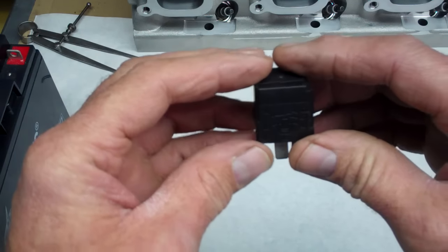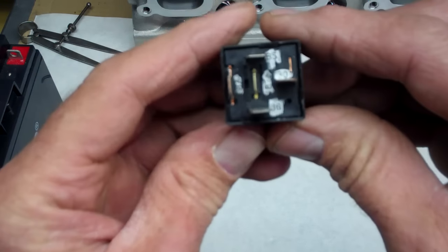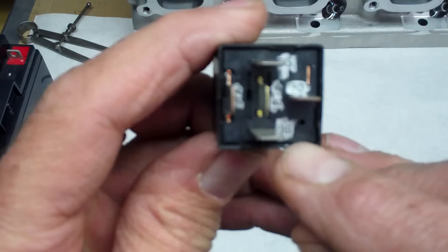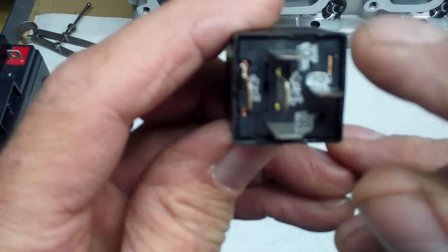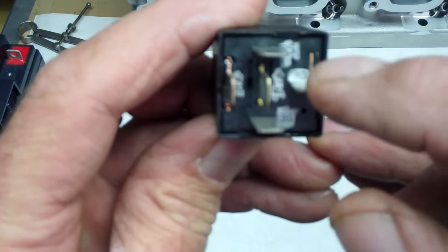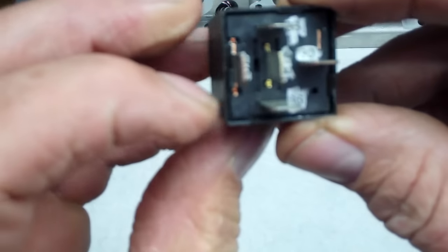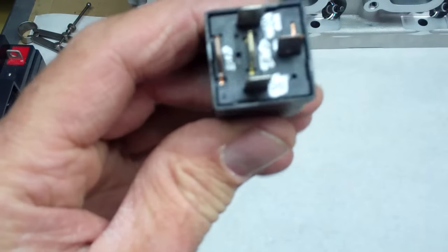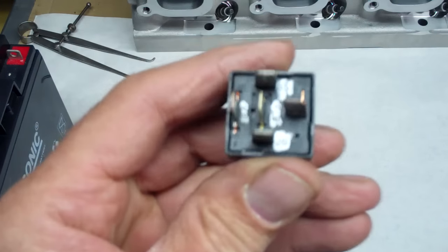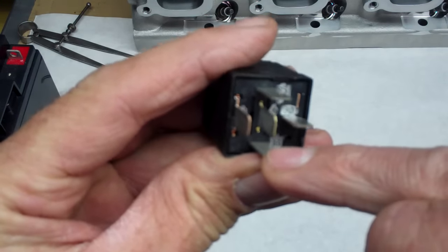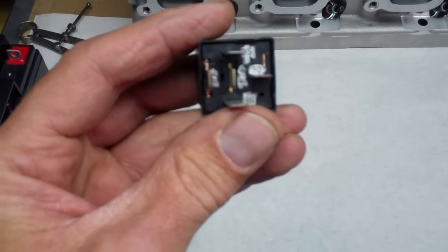Let's look real quickly at this relay. You'll notice on the bottom each one of these terminals has a number. This is 86, 30, 85, 87 and the center terminal is 87A. That's important because the terminal numbers tell us how this relay should be wired.